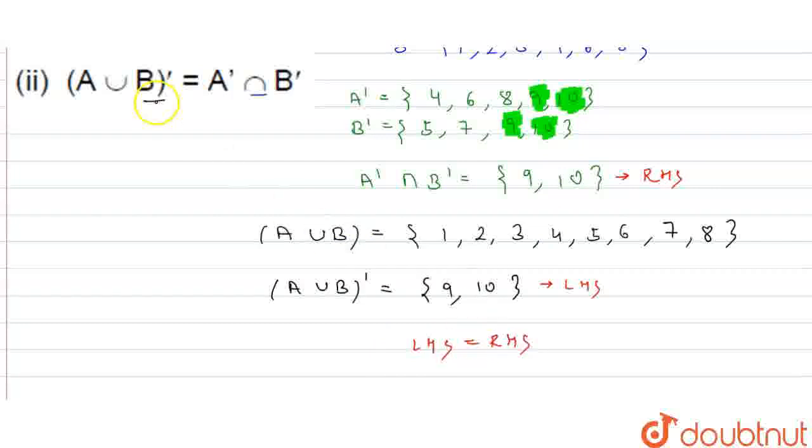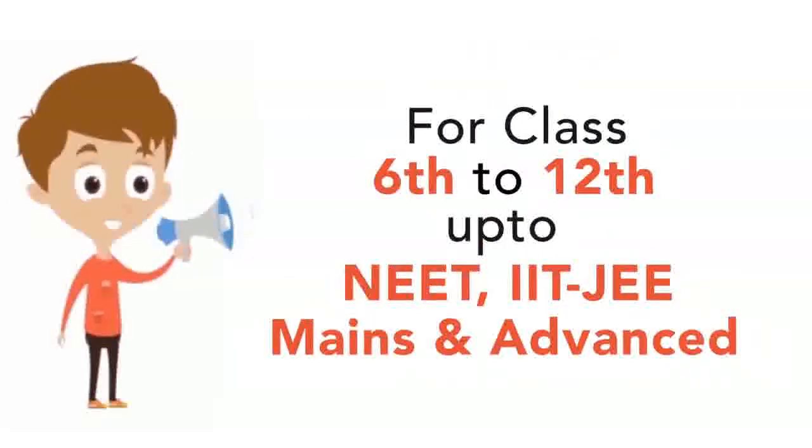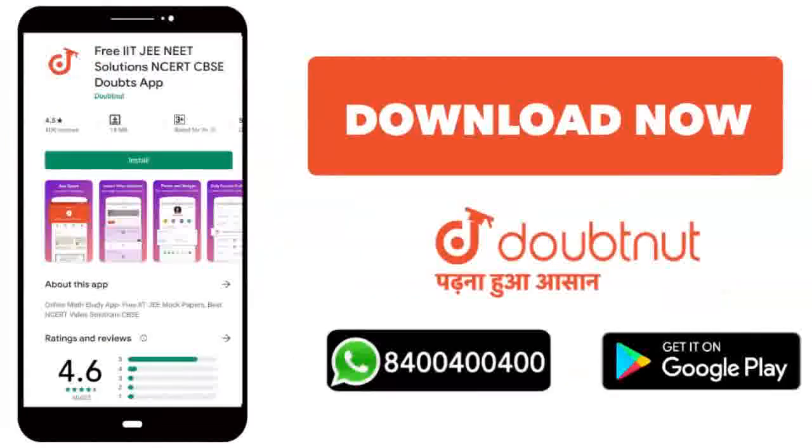For classes 6 to 12 and up to NEET, IIT JEE Mains and Advanced level, trusted by over 10 million students. Download Doubtnet app today or WhatsApp your doubts to 8-400-400-400.